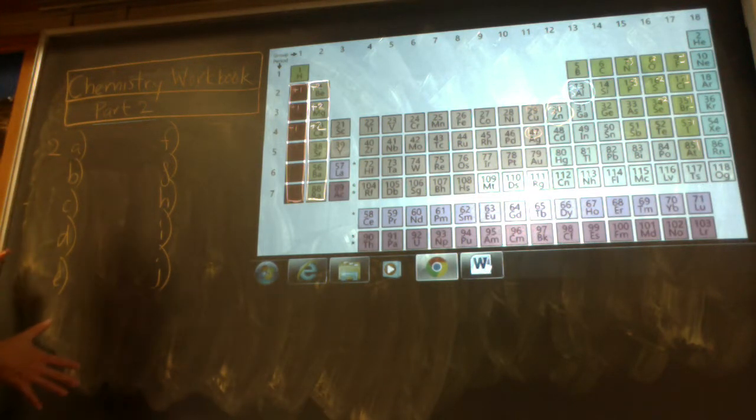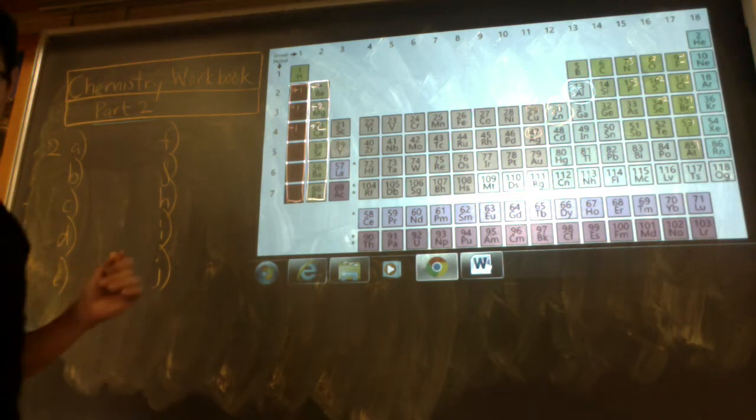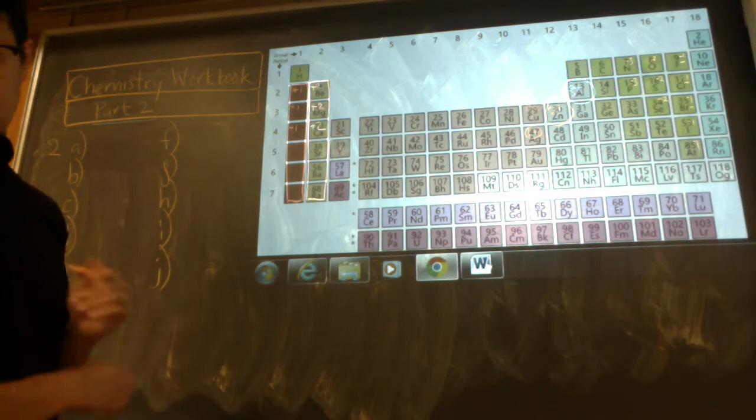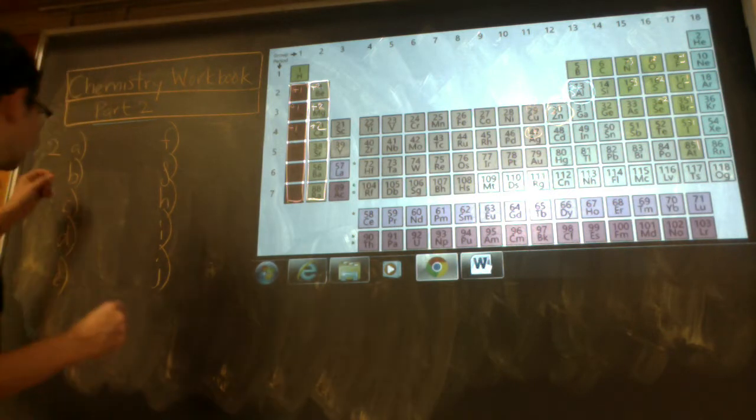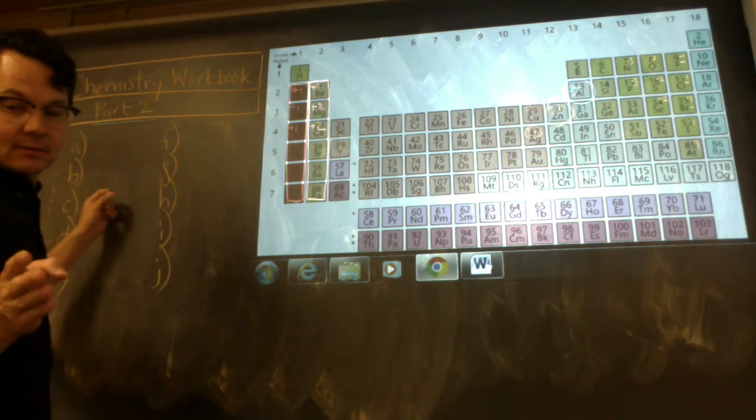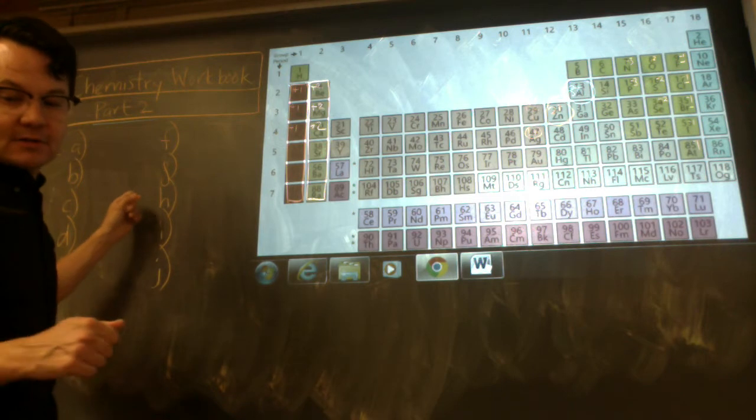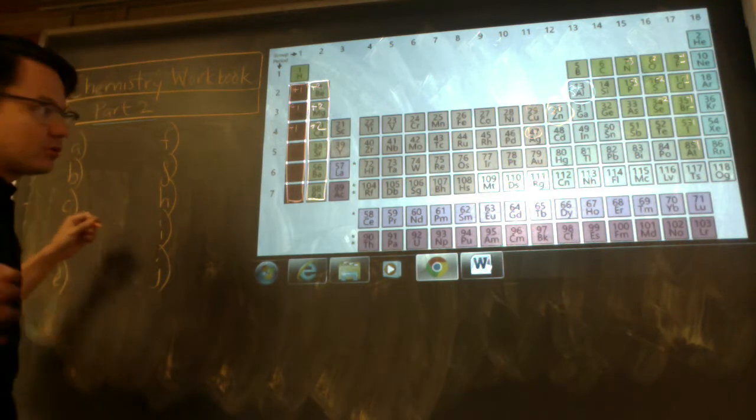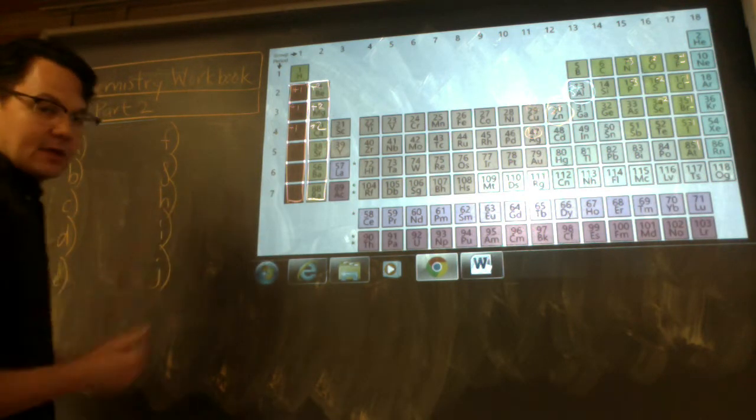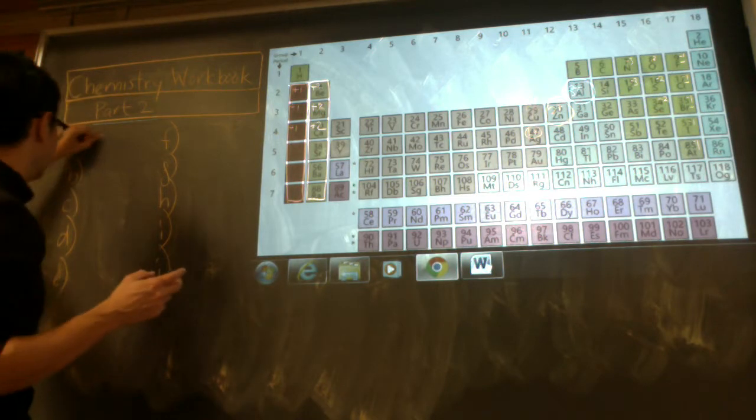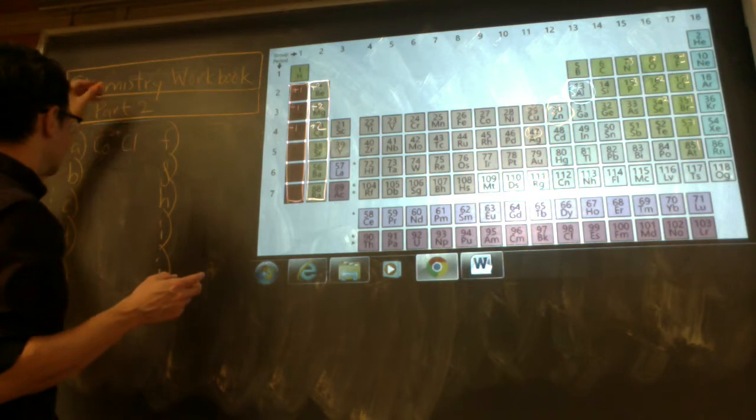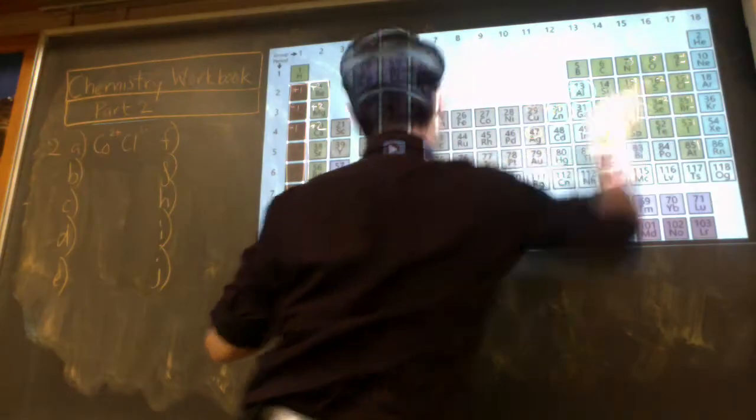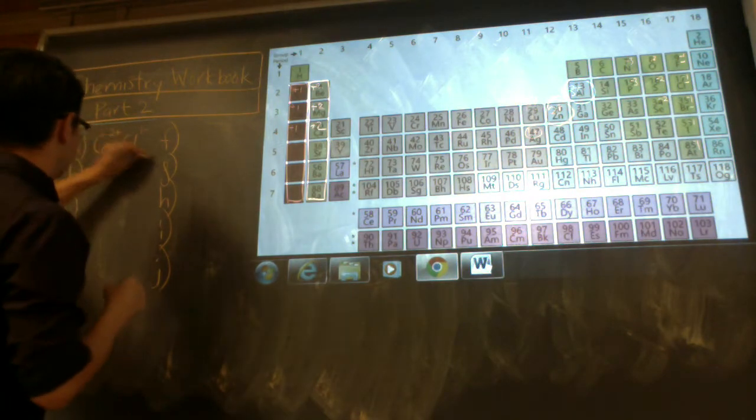Okay, 2A. So exercise 2A, the next page, the Roman numeral method and the multivalent metals. So cobalt(II) chloride. You just look at that 2. That tells you cobalt is 2+ and chlorine is 1- from up here. So it's CoCl2.